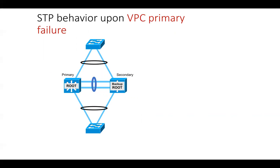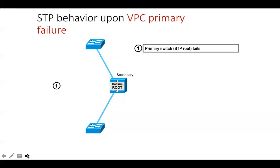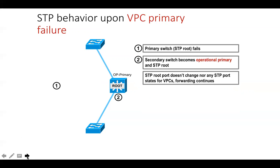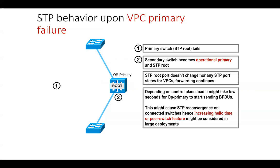Now let's discuss the VPC peer switch feature. Before that, let's discuss spanning tree behavior during a failure. Assume Switch 1 is VPC primary and Switch 2 is VPC secondary. If the primary switch goes down, Switch 2 will become the operational primary and also become the STP root. There should be no port state changes on those ports, meaning no traffic disruption — but this depends on whether the control plane is healthy. If the control plane is over-utilized, it may trigger STP reconvergence and cause disruption.